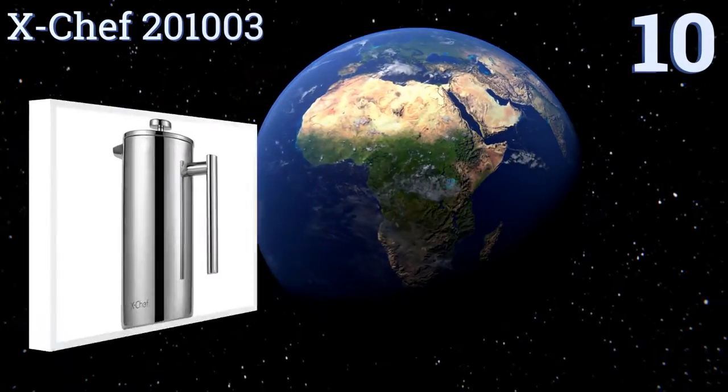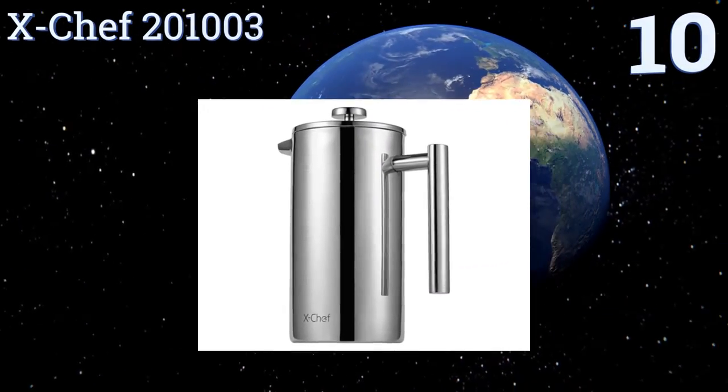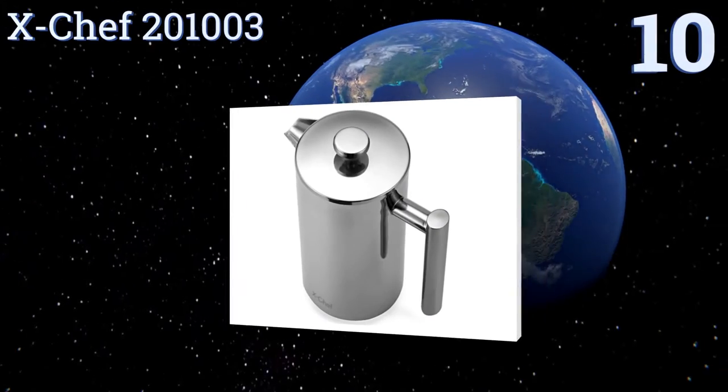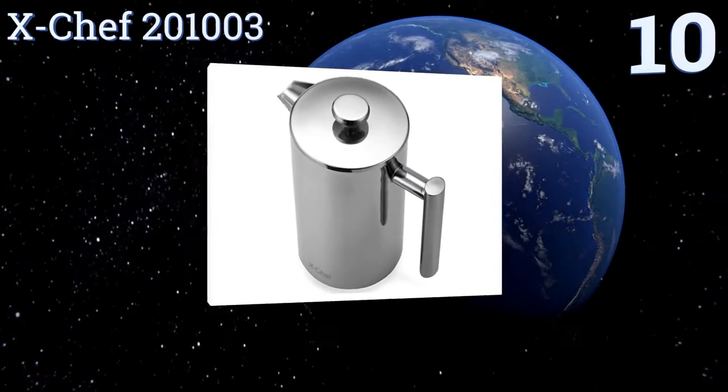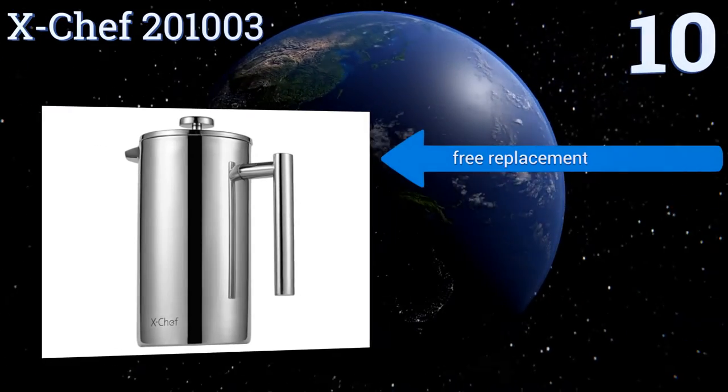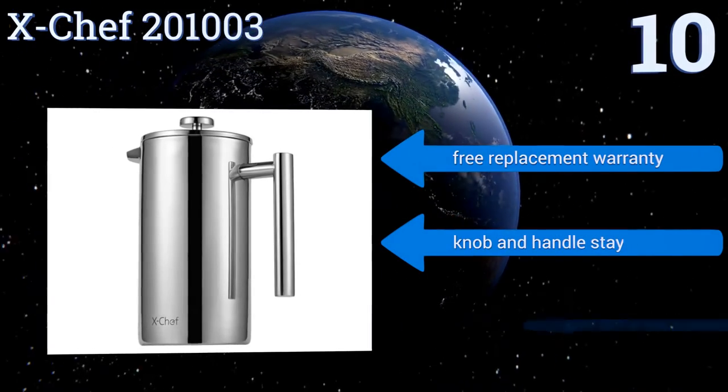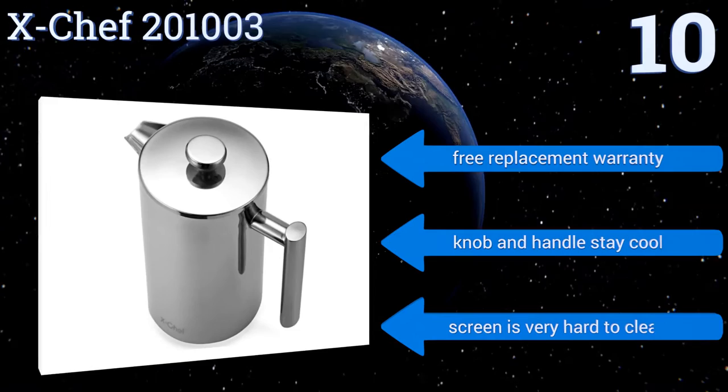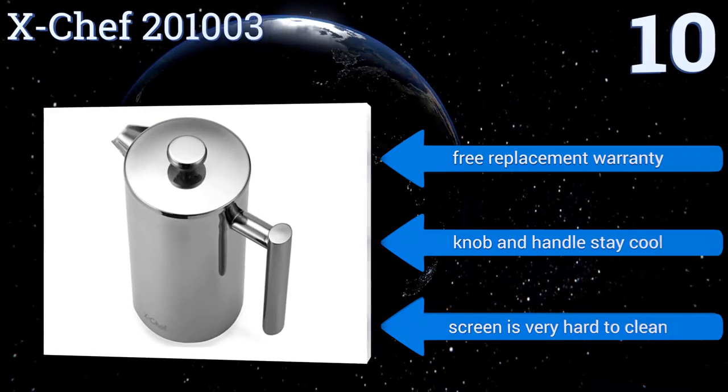Starting off our list at number 10, the X-Chef 201003 offers a good amount of heat retention due to its double wall design. Its mirror-finished steel doesn't affect the flavor of coffee, so you can rest easy that you'll taste all the subtleties in your brew. It comes with a free replacement warranty and a knob and handle that stay cool. However, the screen is very hard to clean.